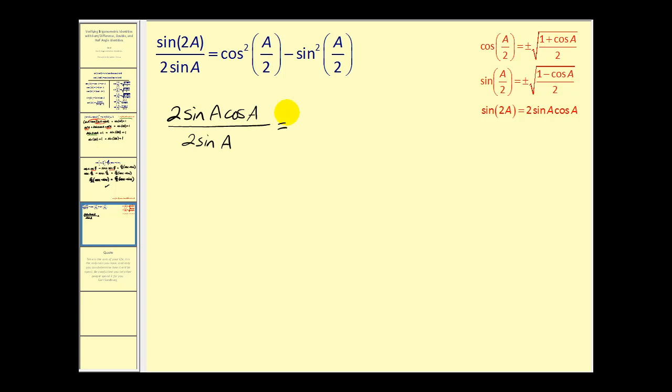And on the right side I'm going to use the half angle identities. Notice that this is cosine squared a over two. So that's going to eliminate the square root here. So cosine squared a over two is going to equal one plus cosine a over two.